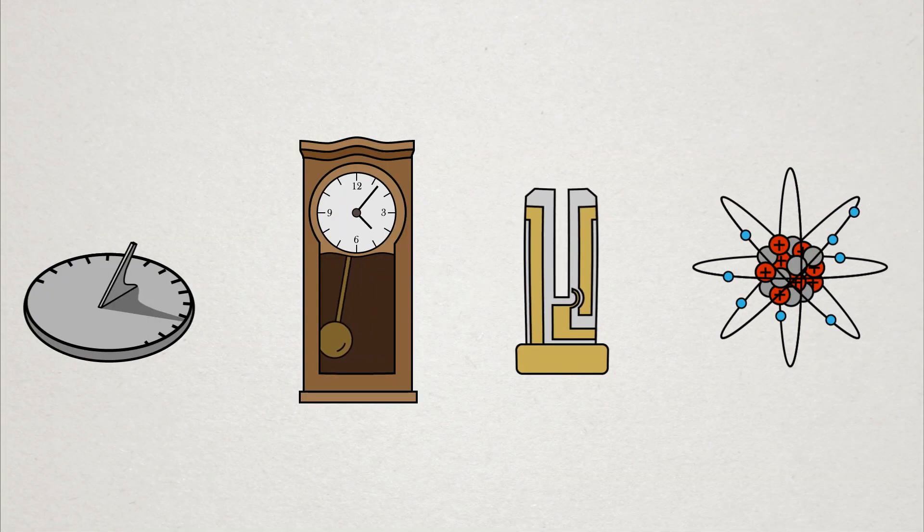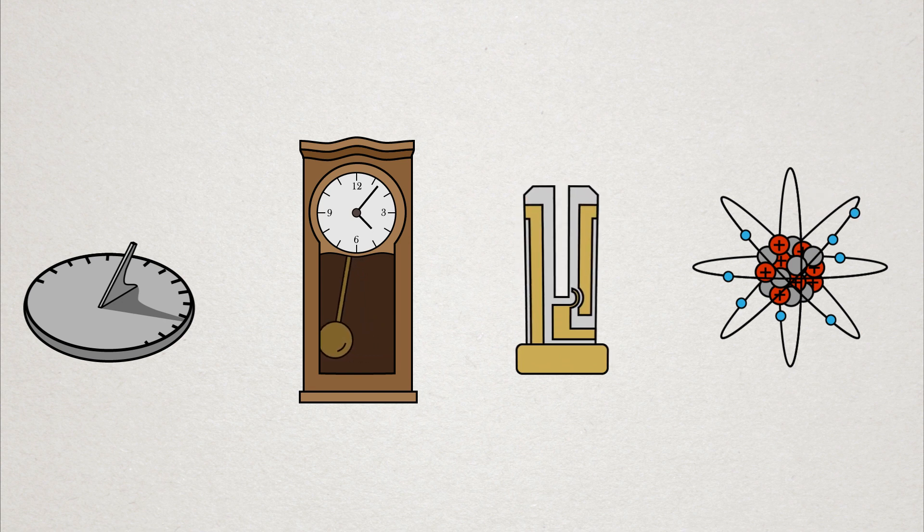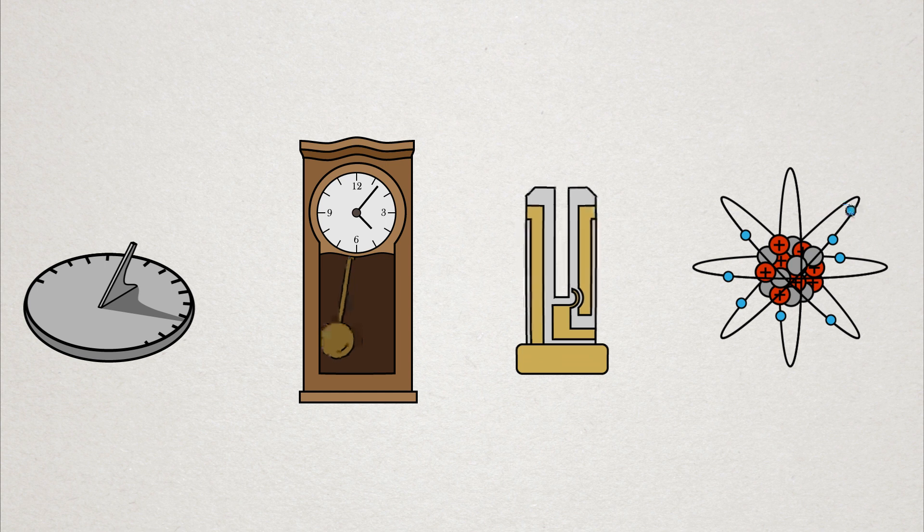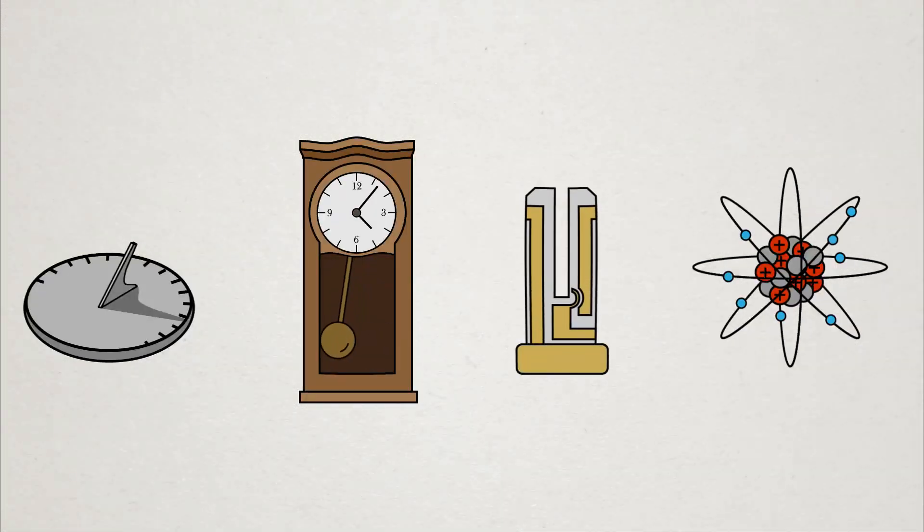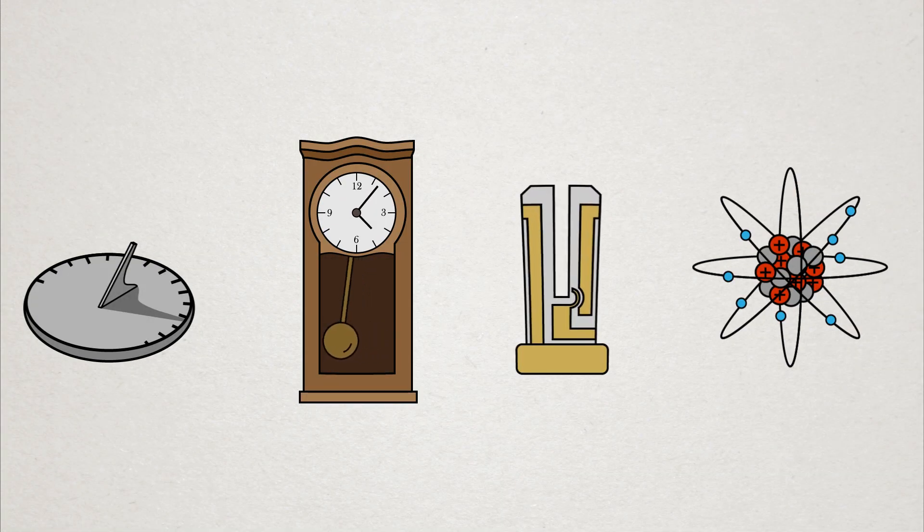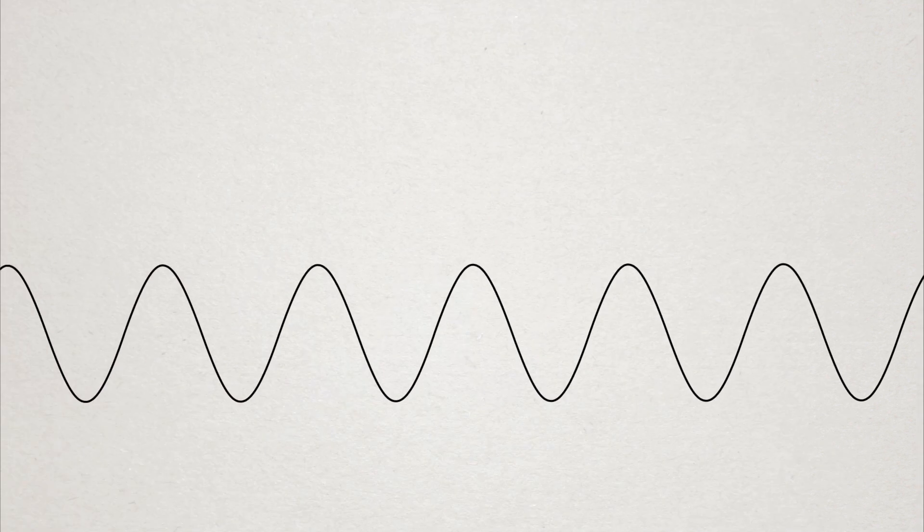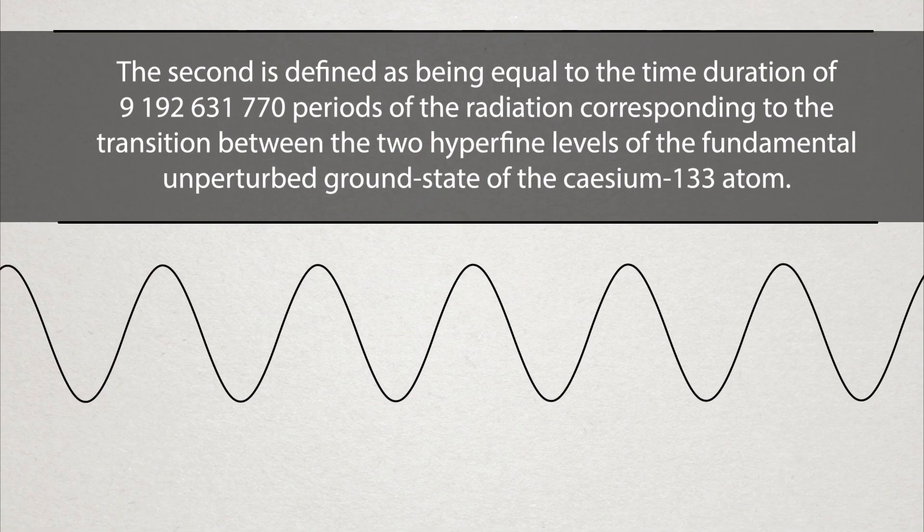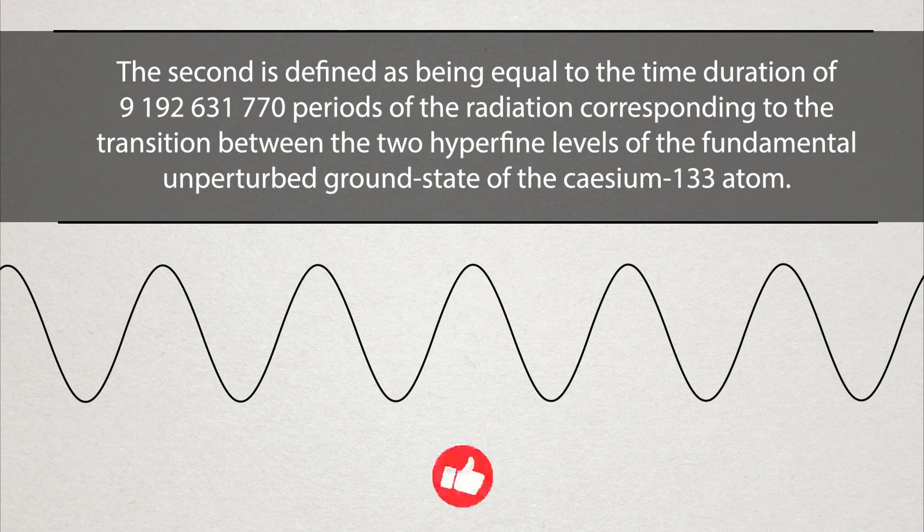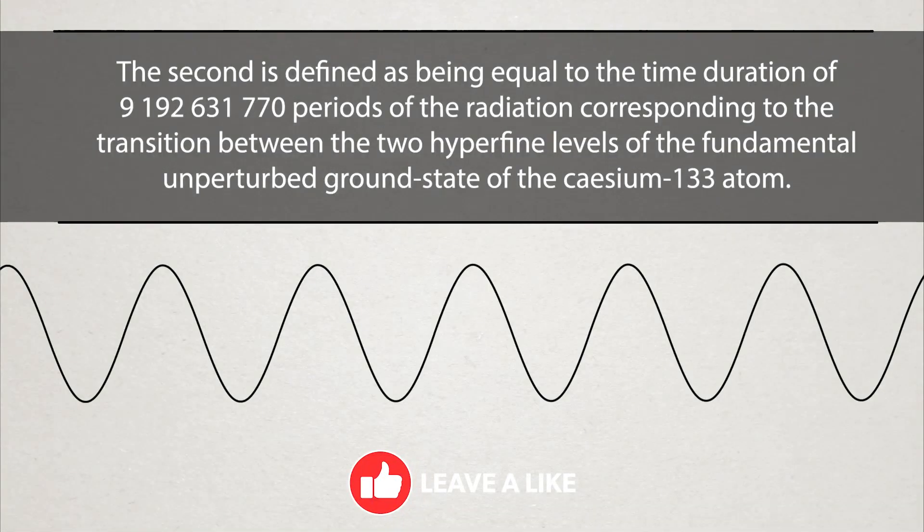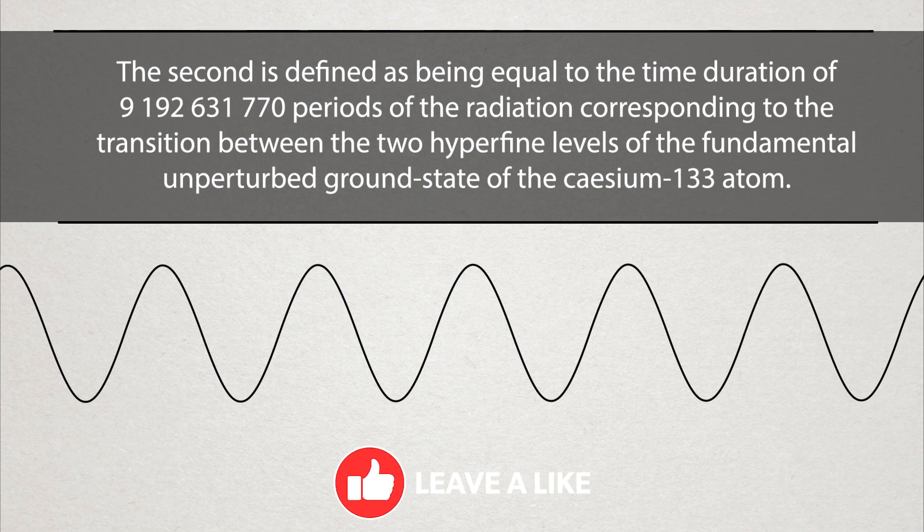In fact, atomic clocks are incredibly accurate and stable to within one second for millions to billions of years. We use atomic clocks to define how long a second is, which is defined as 9,192,631,770 periods of the radiation corresponding to a specific cesium atom transition.